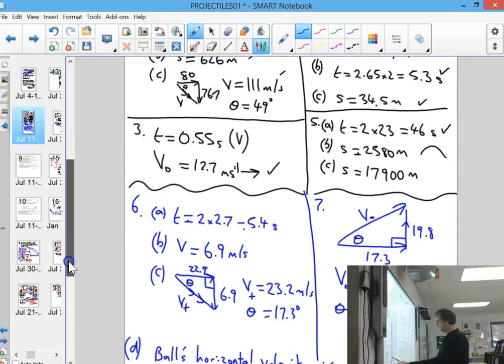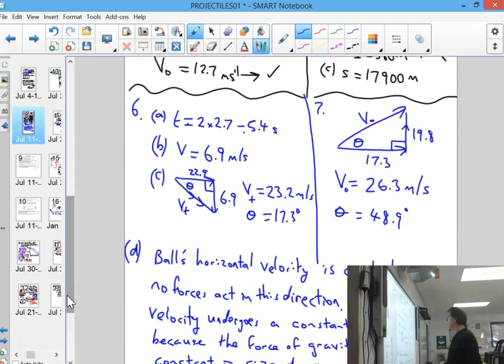Question six is here if you want to check your notes. The time has been doubled again, the initial velocity in terms of size vertically, and the combined velocity has been given as an angle and a size.